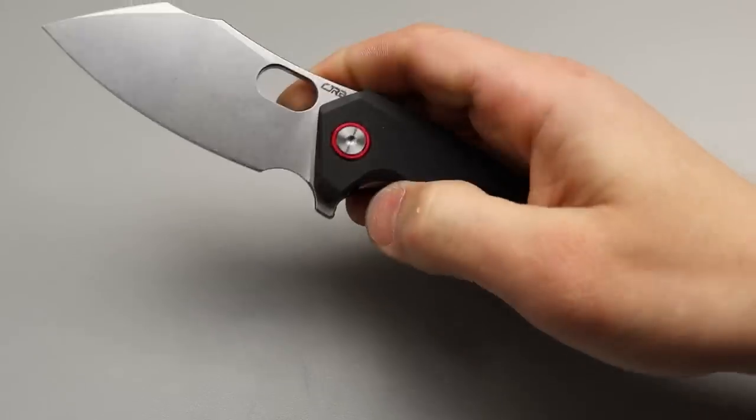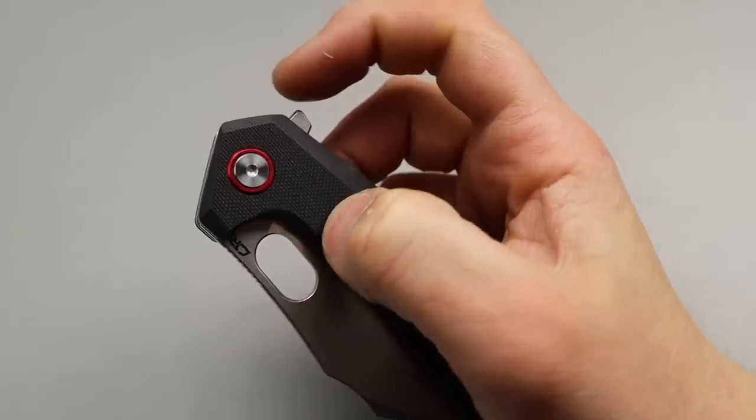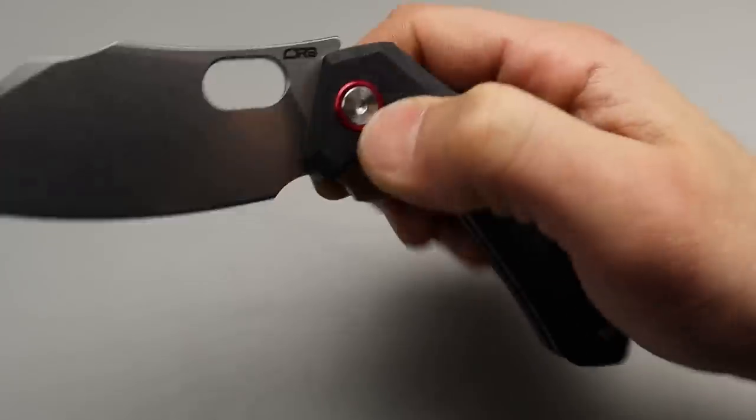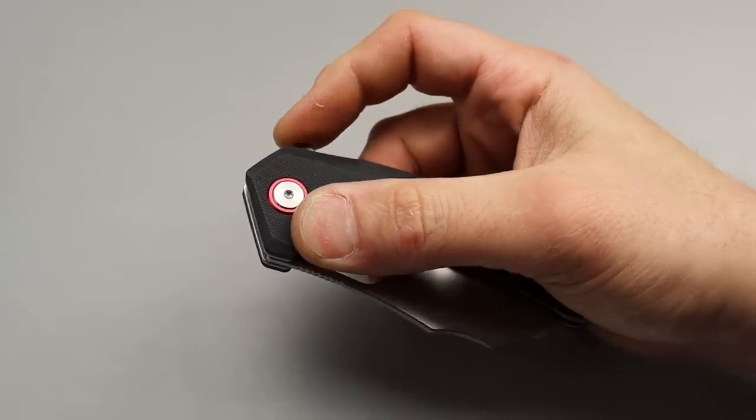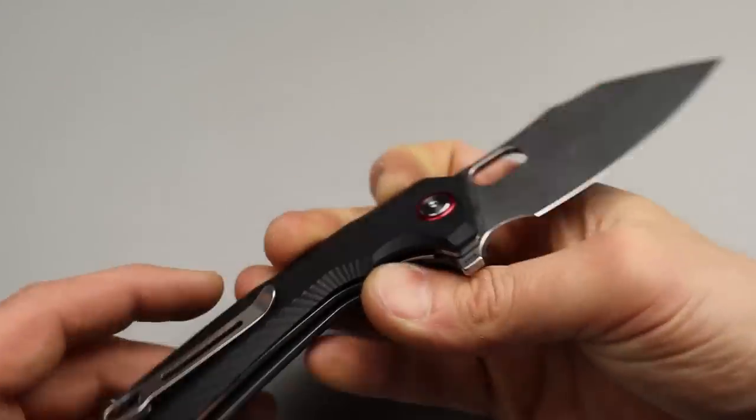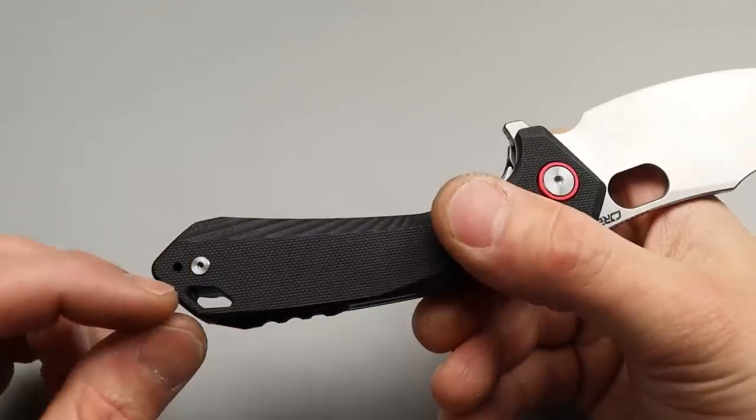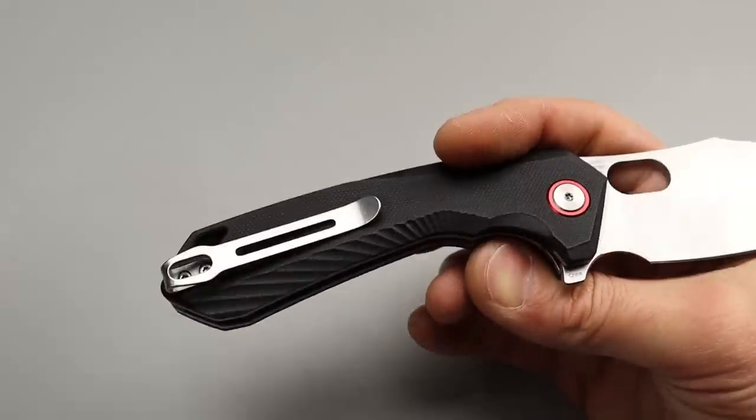Very smooth on the drop. And then you have the flipper tab. It's kind of upswept a little bit and the detent is solid. You can push button it or light switch it. Both of them work very well. Then it has a deep carry clip that's not inset, but it is reversible.